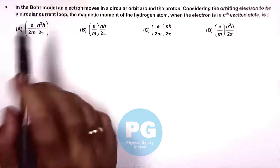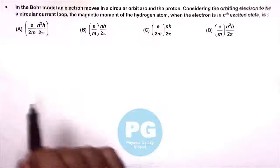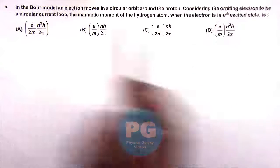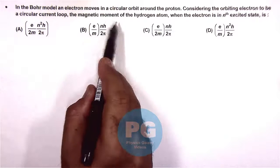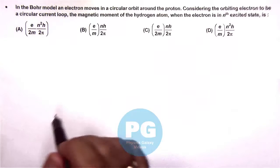In this question it says that in the Bohr model an electron moves in a circular orbit around the proton, and considering the orbiting electron to be a circular current loop, the magnetic moment of hydrogen atom when the electron is in nth excited state is